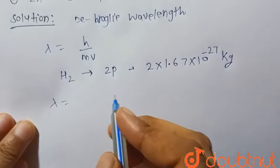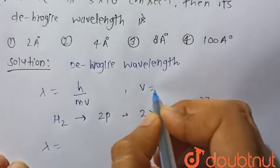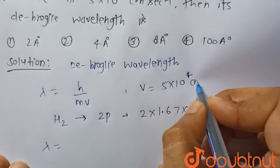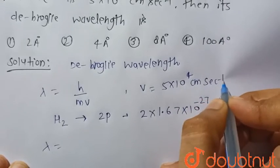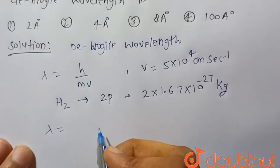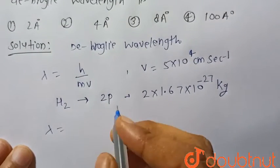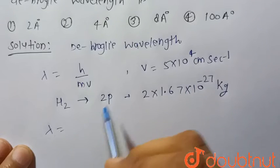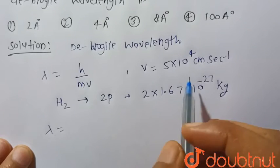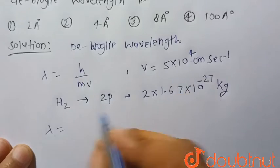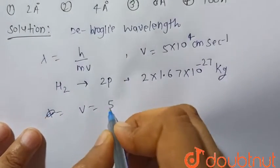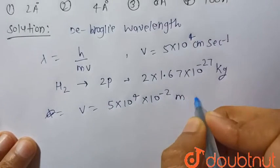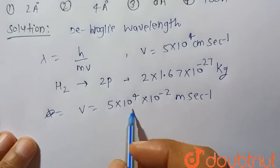V is already given in the question, that is 5 × 10^4 centimeter per second. First we have to change this velocity into meter per second because we are calculating in the MKS system. So the velocity in meter per second will be 5 × 10^4 × 10^-2 meter per second.